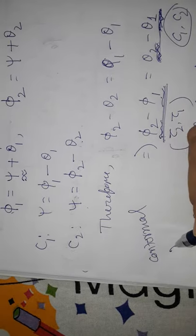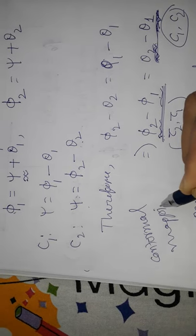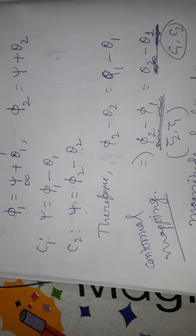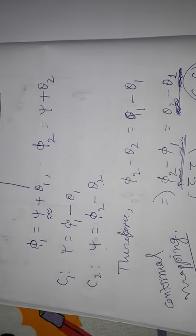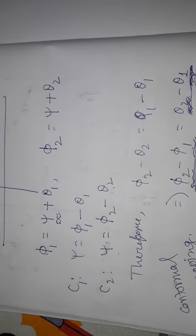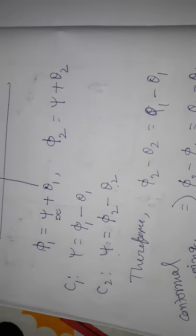This angle-preserving property is called conformal mapping. For a mapping to be conformal at a point, f must be analytic there and f'(z₀) must not be equal to zero. Such a mapping is called a conformal mapping.